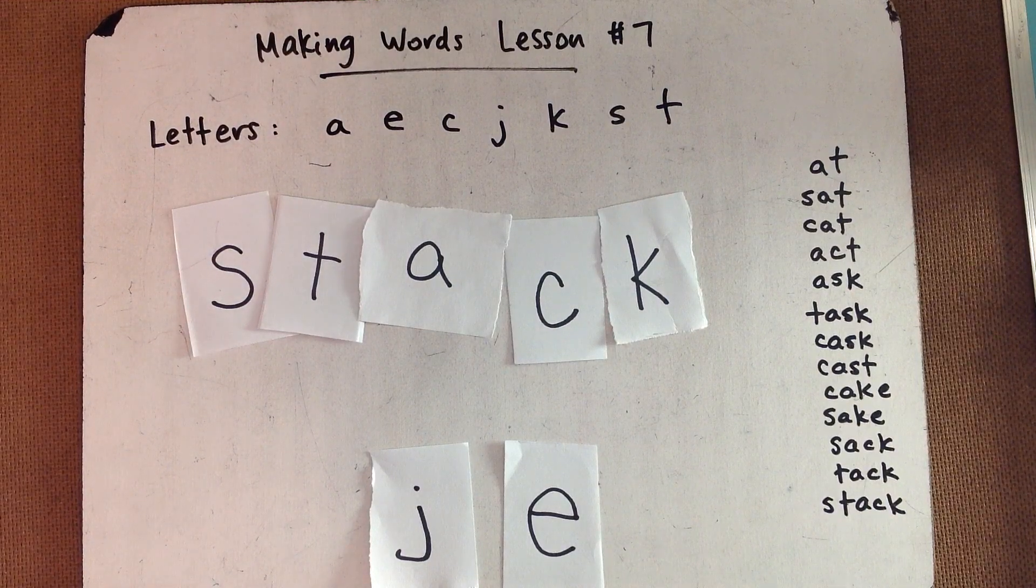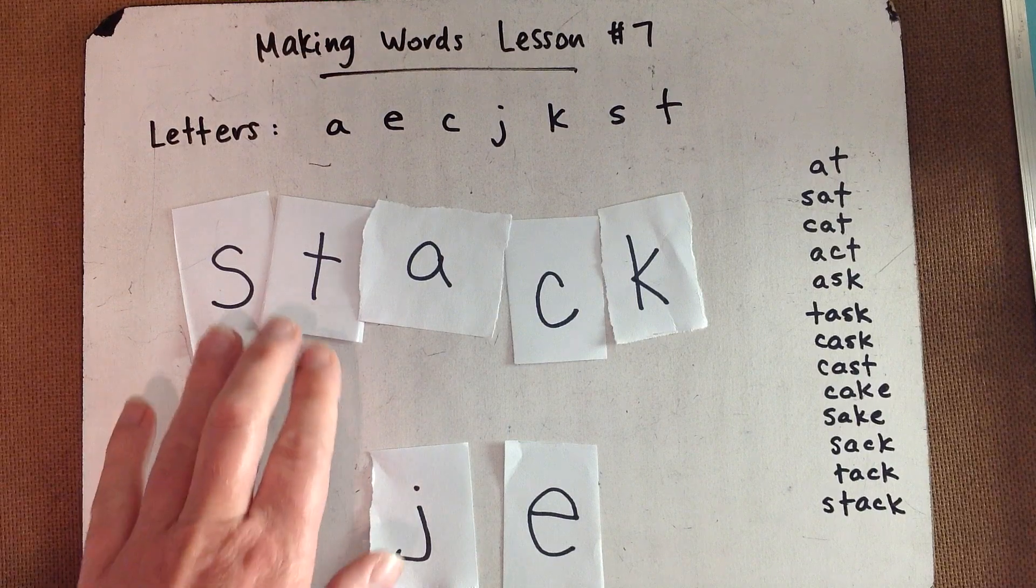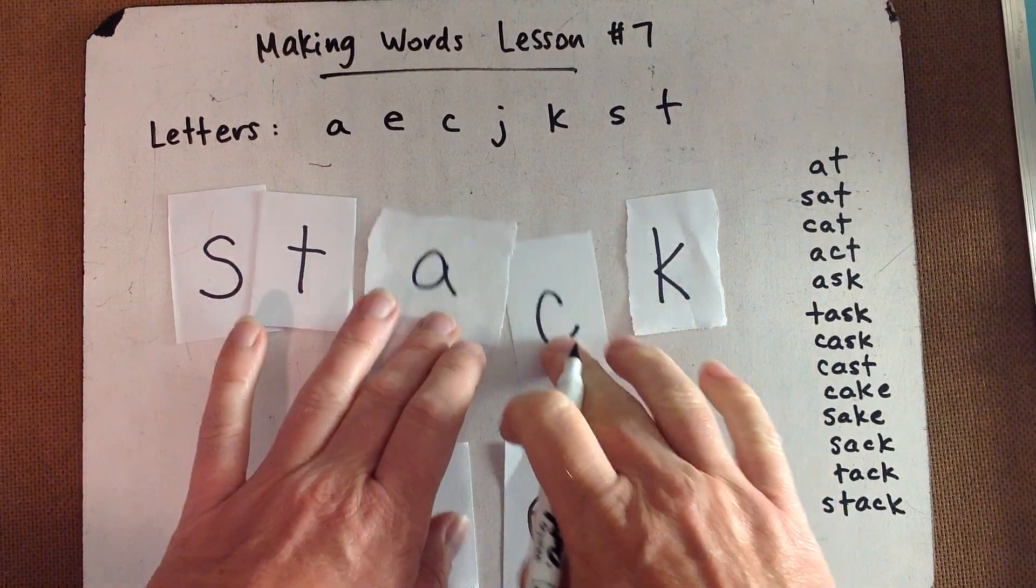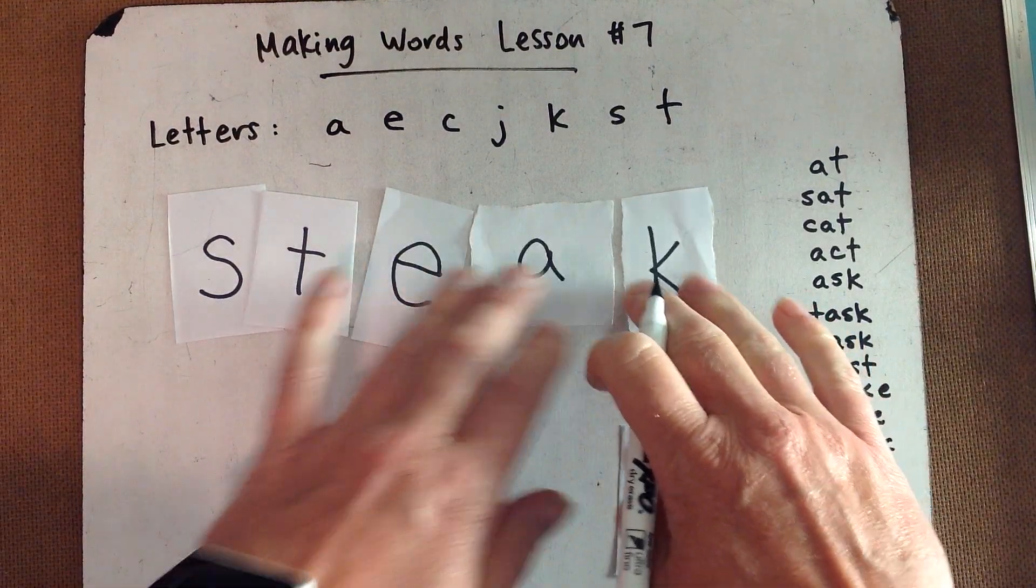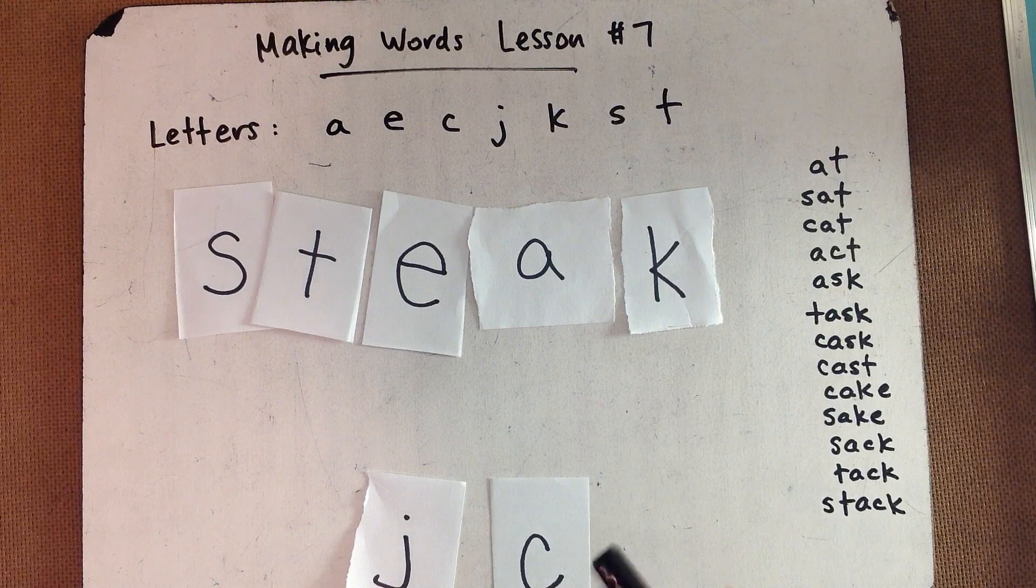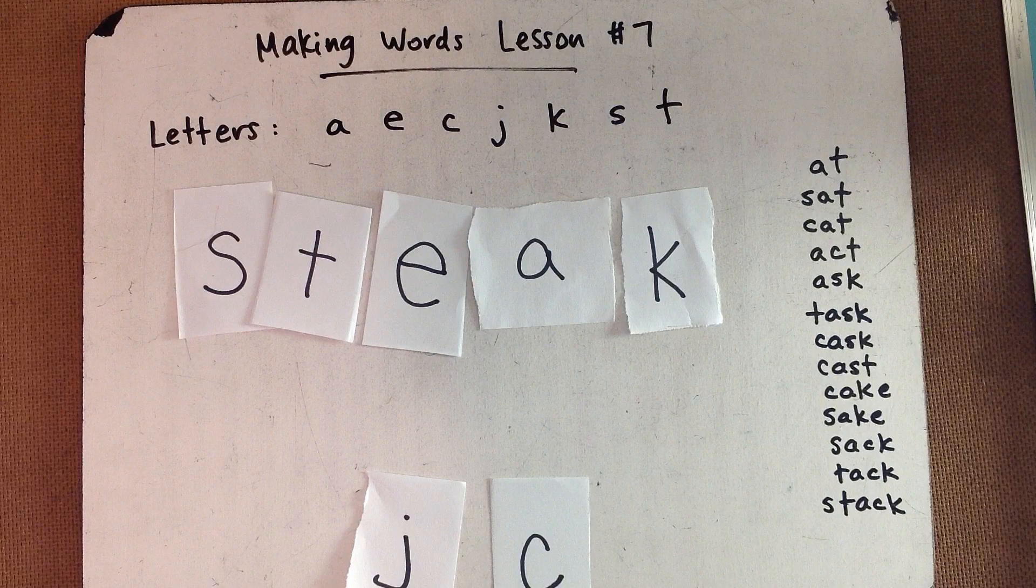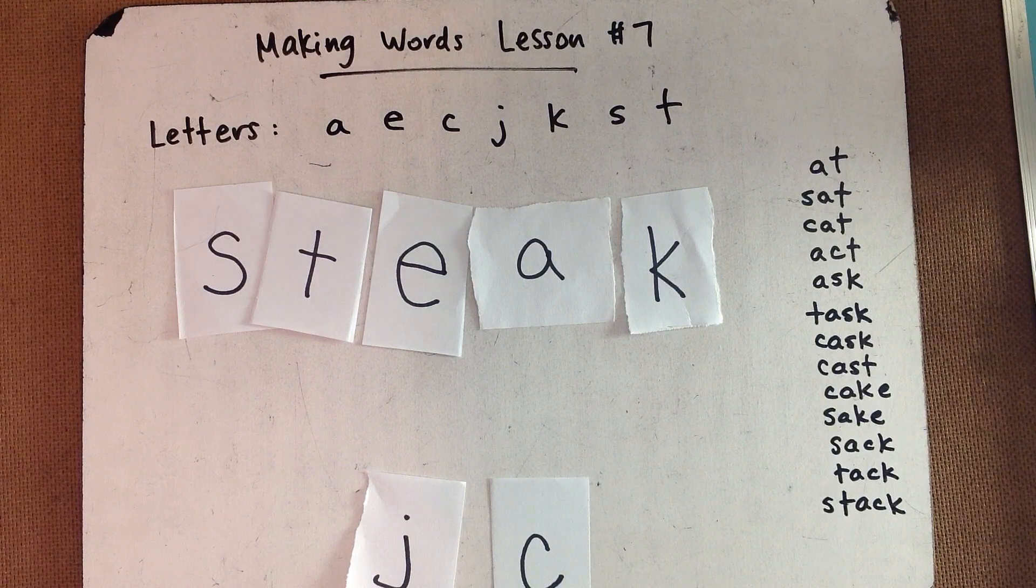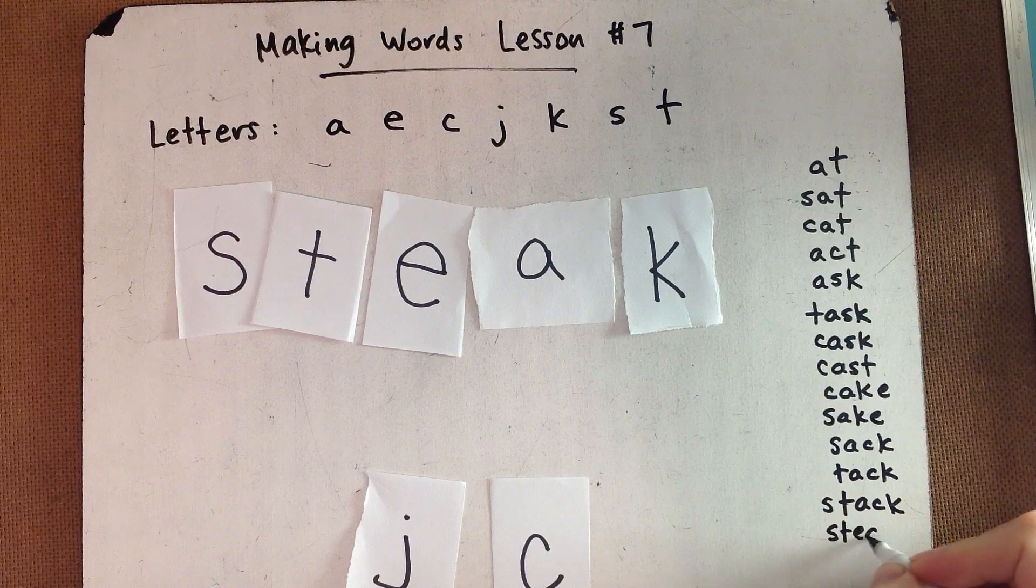And now spell steak. I had a nice juicy steak for dinner. Steak. We still need the K on the end, but we need a vowel combination here. And it's the E-A. Now, sometimes you hear me say when two vowels go walking, the first one does the talking. But this isn't steak. It's steak. So this is just one of those words you recognize by sight with a lot of practice. And it's S-T-E-A-K.